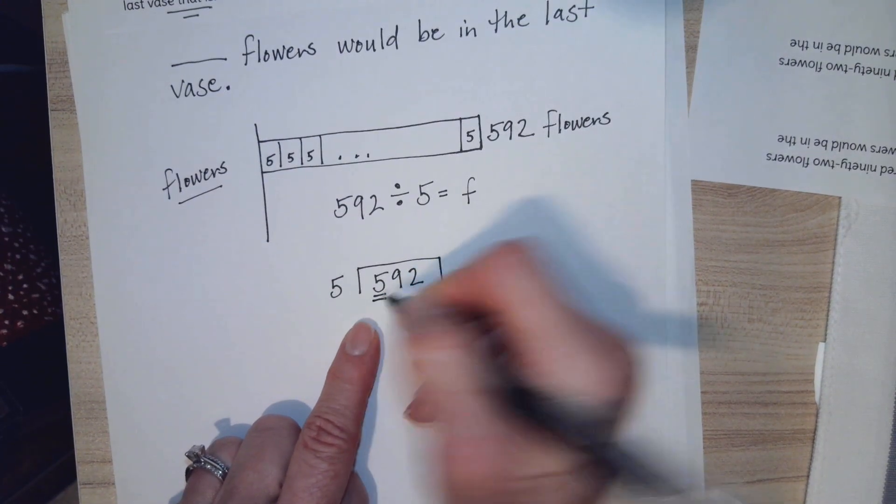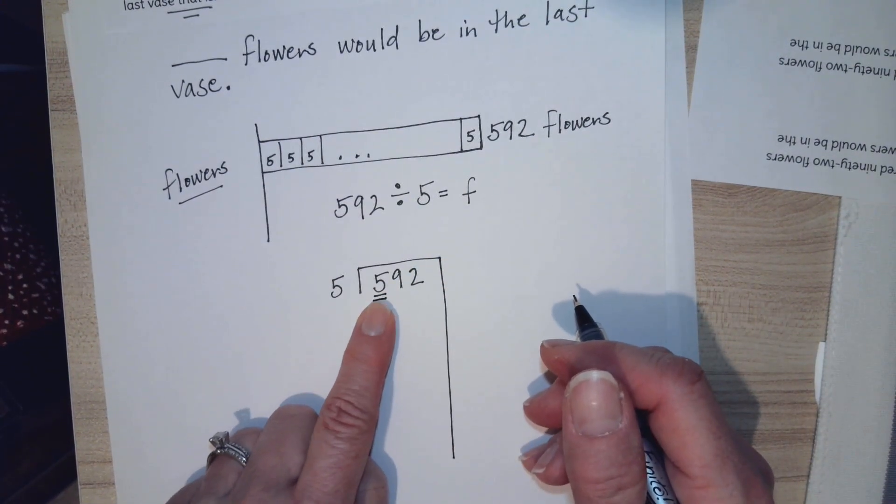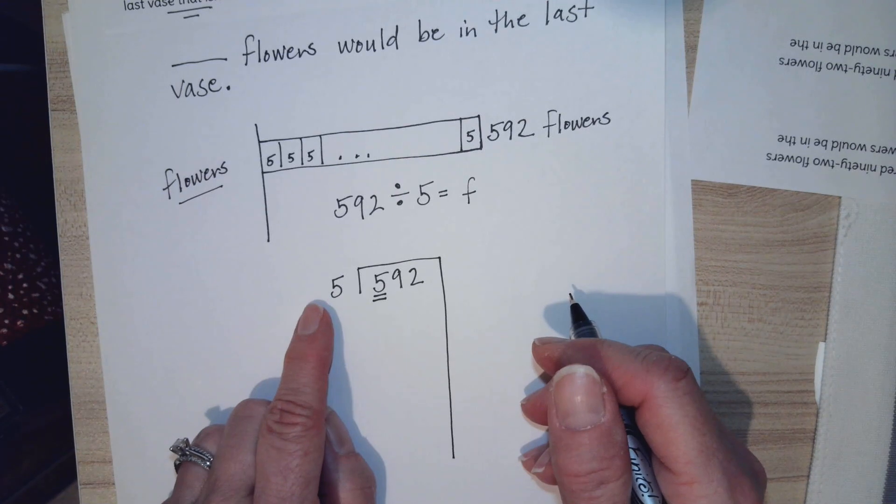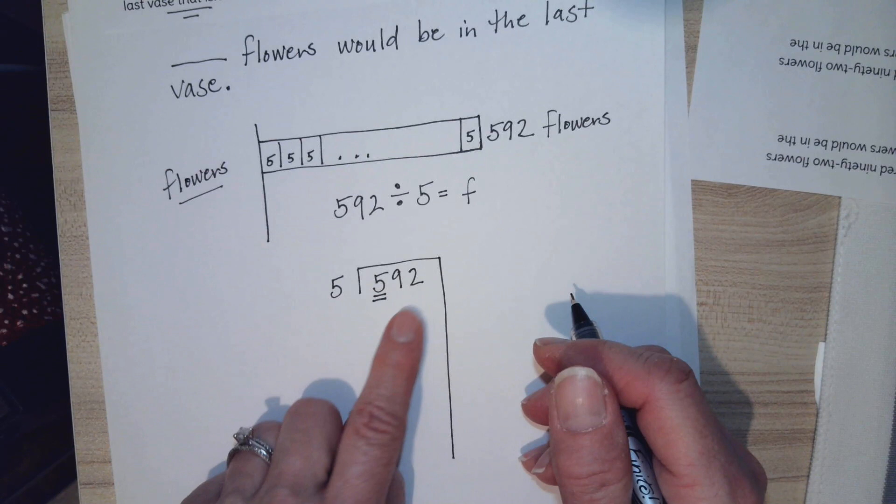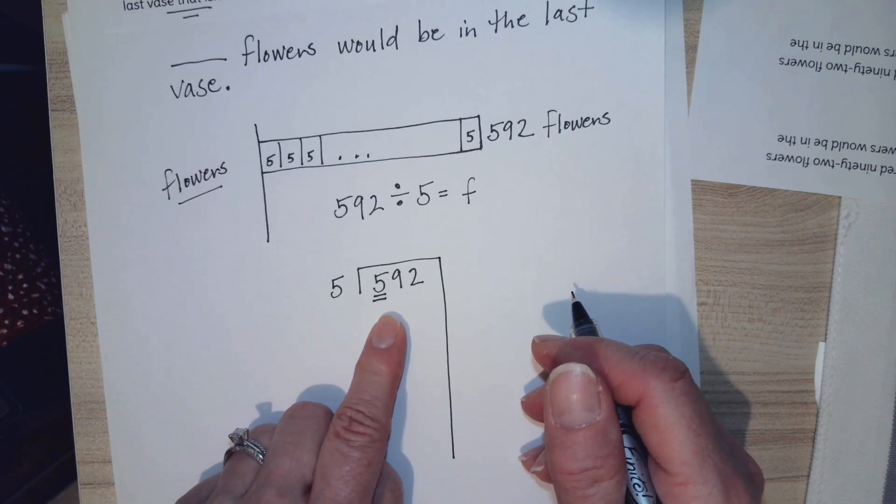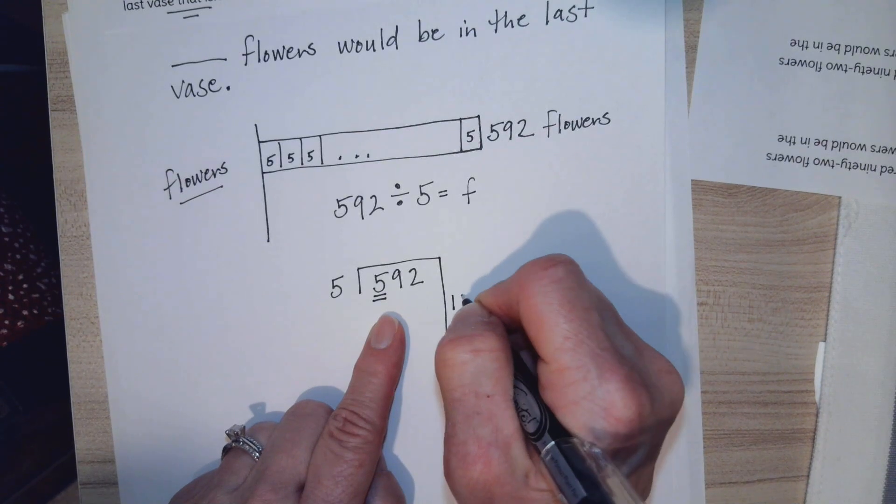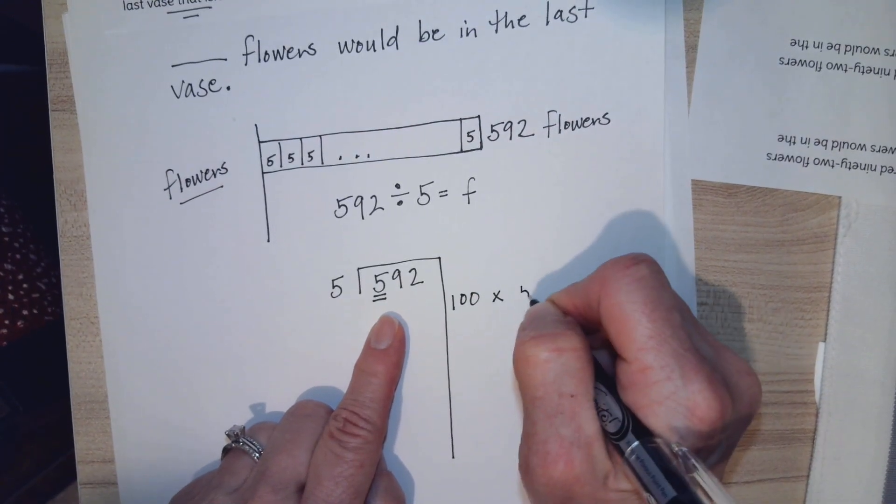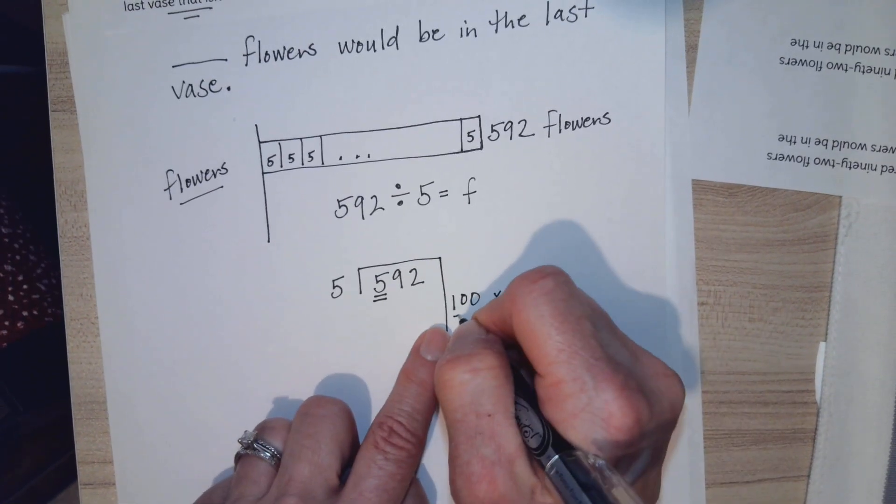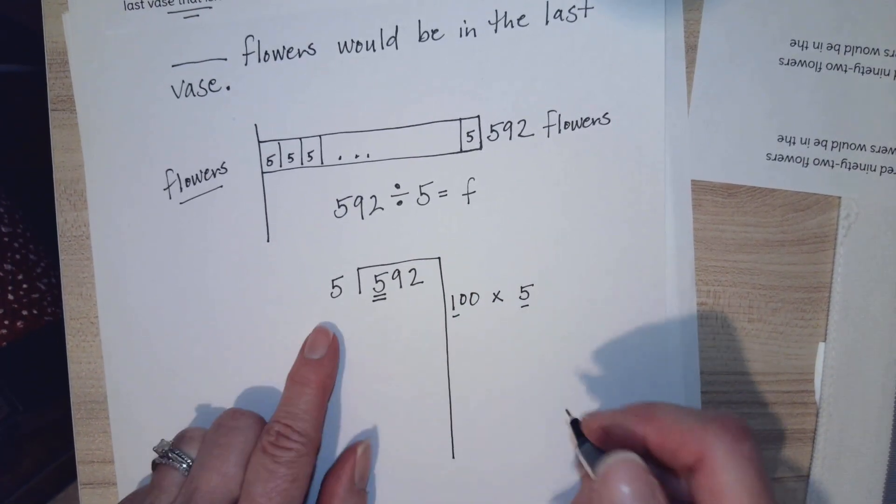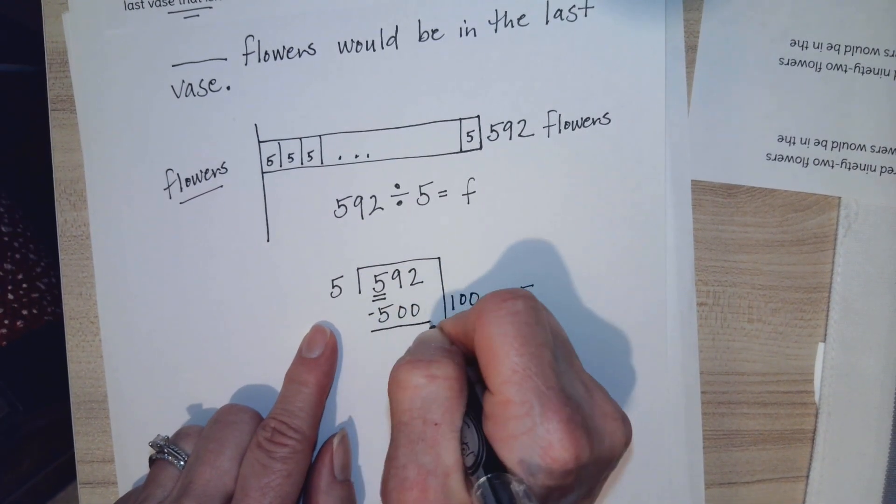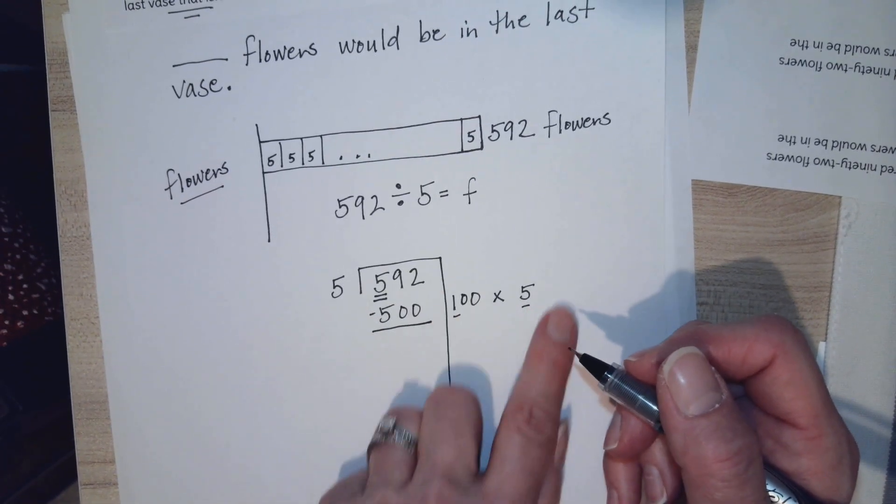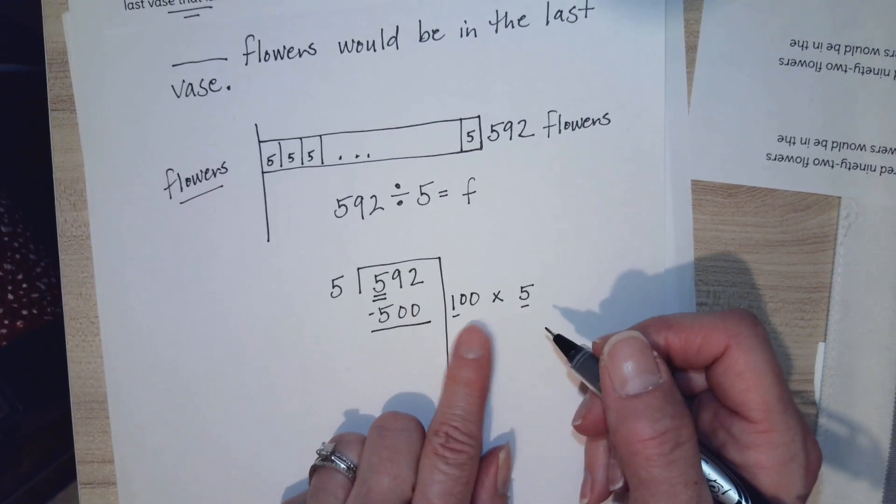I look at my largest place and it's hundreds. So I think to myself, can I multiply 5 by 100 or 200 or 300 to get as close to 592 as possible without going over? And I can. I can do 100 times 5 because 5 times 100 is 500. This is going to be my partial quotient. Part of my answer is going to be 100.